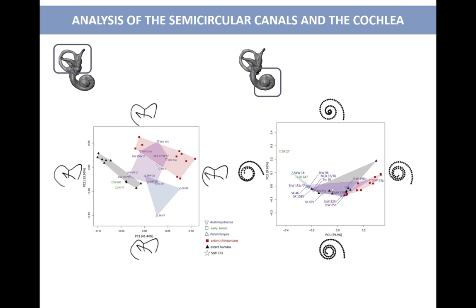If we look at the cochlea, the signal is a bit more complex to interpret, but at least what we can say is that the cochlea of Littlefoot seems to be very similar to the other Australopithecus specimens, potentially meaning that the way they could hear was quite the same. But it is very different from what we can see in other specimens — more particularly the Paranthropus specimen, which is a group that was living at the same time as the earliest humans.